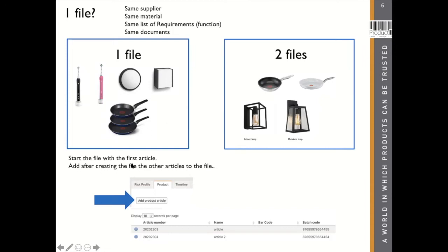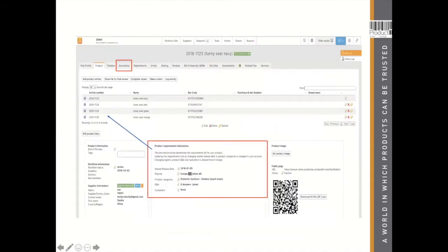You start the technical file from the first article — for instance, the black one — and later add the pink one to it. However, if two pens are made of different materials, or one lamp is indoor and another is outdoor, then different requirements are applicable. Don't create one file for both — create two technical files so you have a perfect overview of the compliancy of each product.